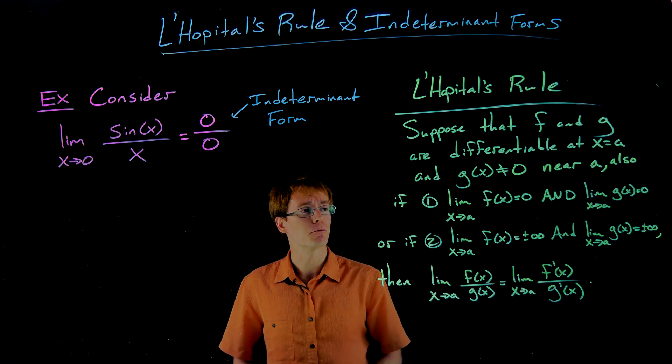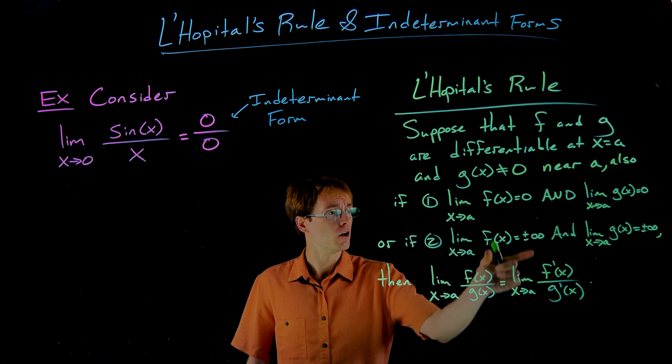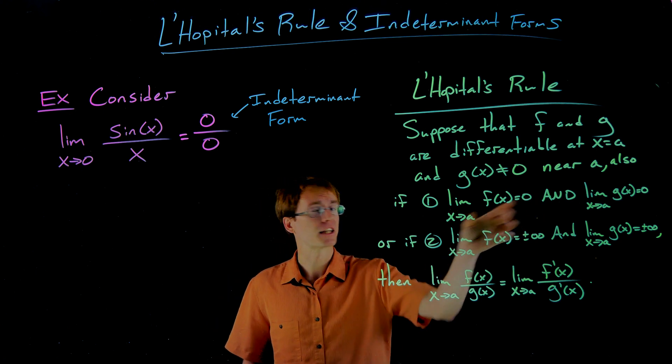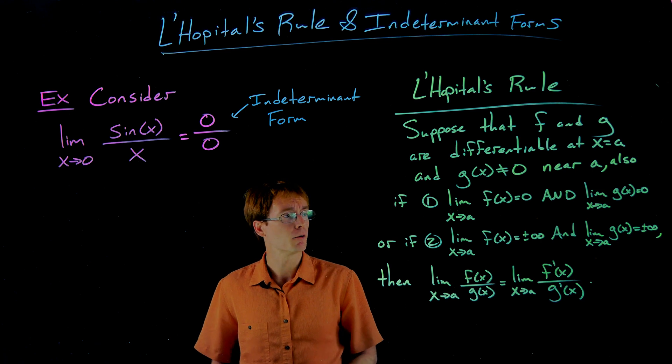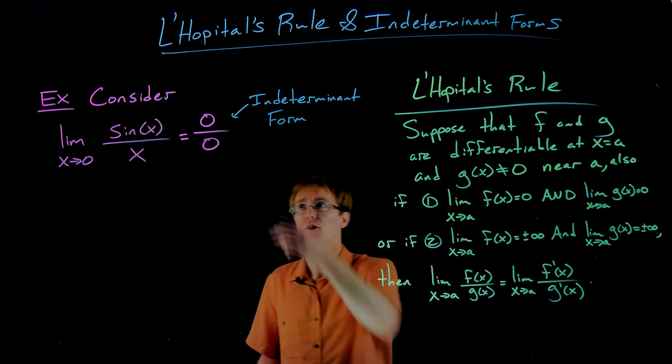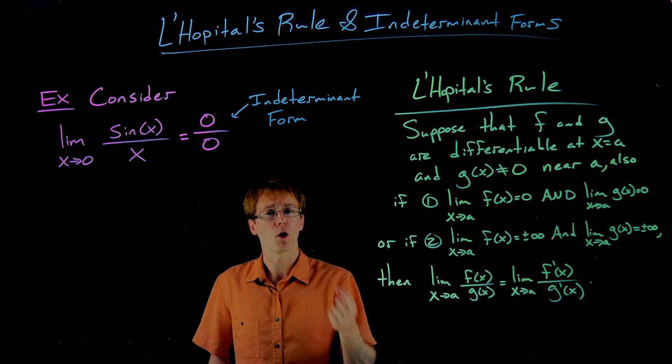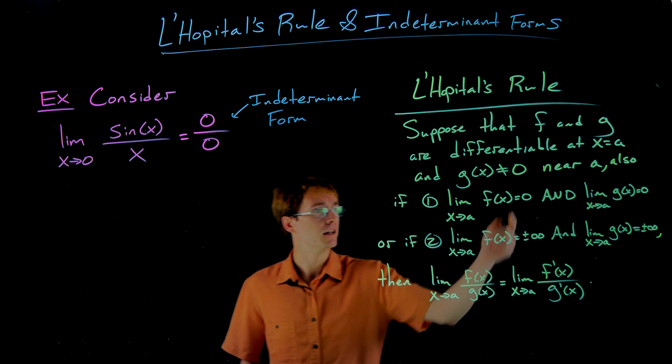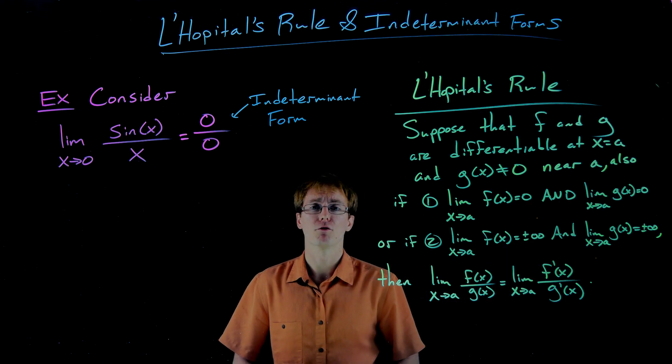So one of these two conditions that have to be met is that both of the limits have to go to zero for our functions, or both of the limits have to go to some version of infinity. If we look at that first case, that's kind of the case we have over here in our sine of x over x example. Both of our functions in the numerator and the denominator approach zero, creating one of these indeterminate forms. That's when we can apply L'Hopital's rule, but we can only apply L'Hopital's rule to these indeterminate quotients, where we have zero over zero, or in the second case, infinity over infinity.